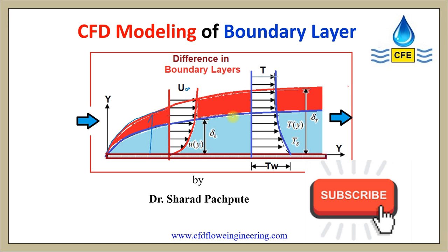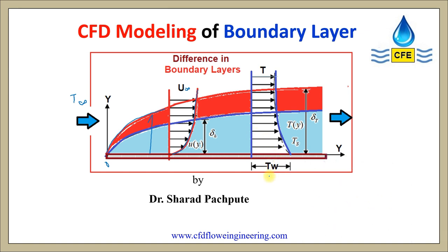When fluid flows over the flat plate near the leading edge, the velocity boundary layer is formed. When fluid at temperature T-infinity flows over the wall which has constant wall temperature T-w, in such a case, thermal boundary layer is formed normal to the flat plate.